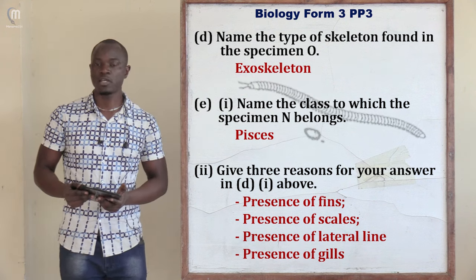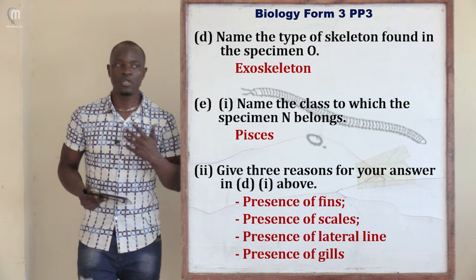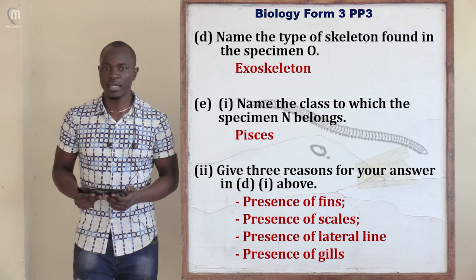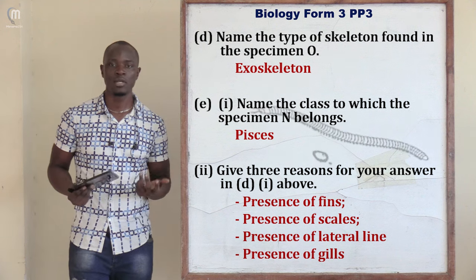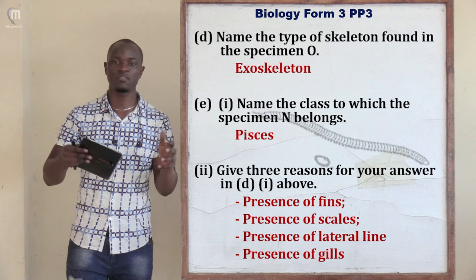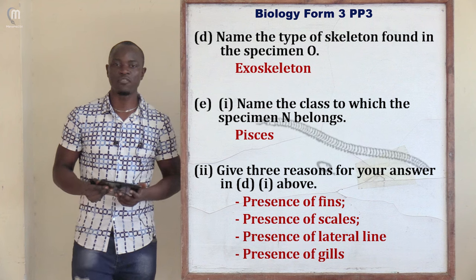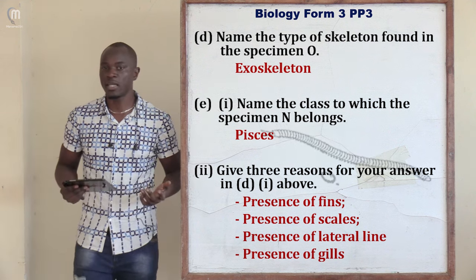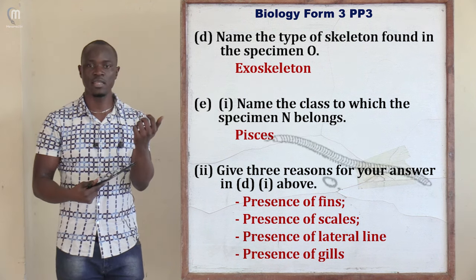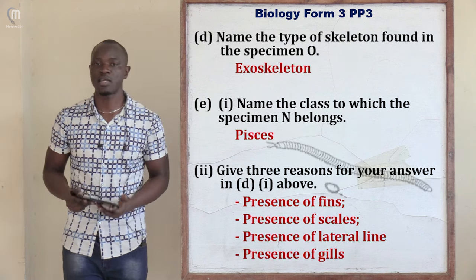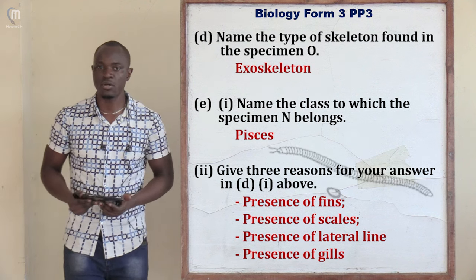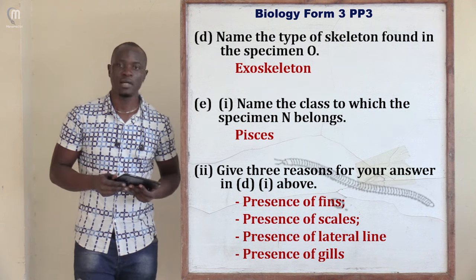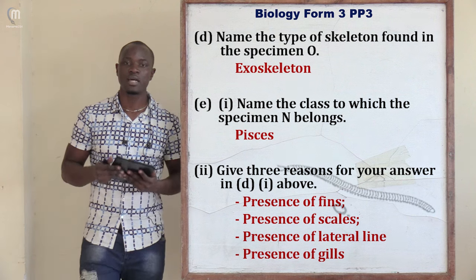From the topic of support and movement in Form 4, there are three types of skeletons. An exoskeleton, found in phylum Arthropoda, is a skeleton on the outside with flesh on the inside. An endoskeleton, found in most class Mammalia and phylum Chordata vertebrates, is a skeleton inside the body with flesh on the outside. A hydrostatic skeleton, found in organisms like earthworms, is a fluid that gives the body its form.